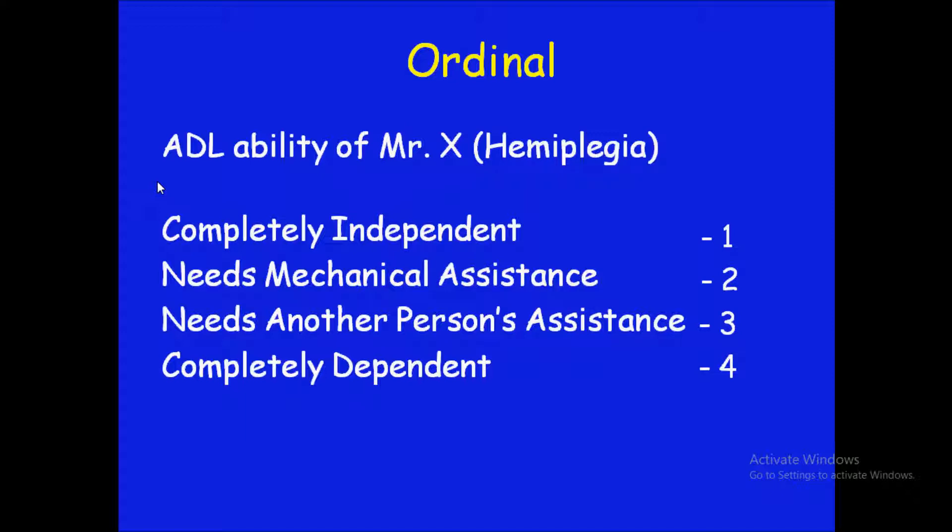The numbers one, two, three, and four have their own values. Number one, completely independent, is definitely better than number two, needs mechanical assistance. In nominal scale I can't say that, but here the numbers have magnitude. Similarly, number four, completely dependent, is definitely worse than number three, two, and one. That's what magnitude means — the numbers carry meaningful order.